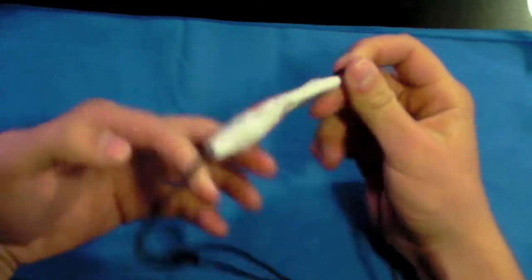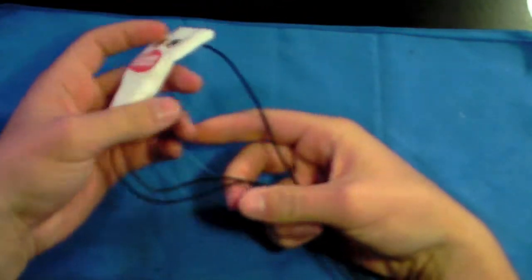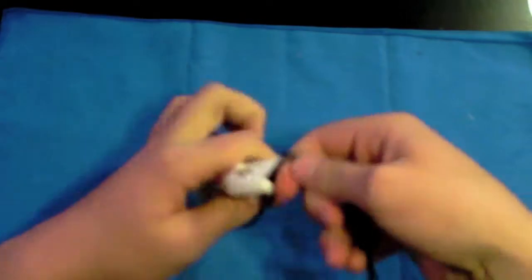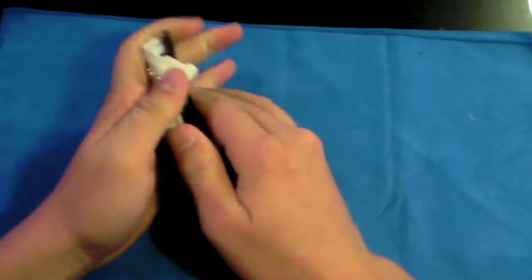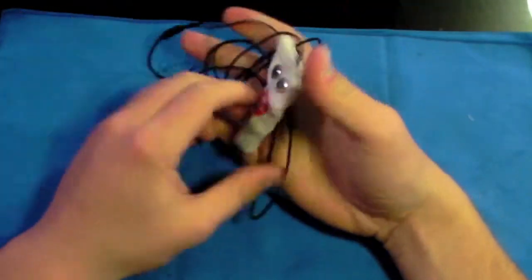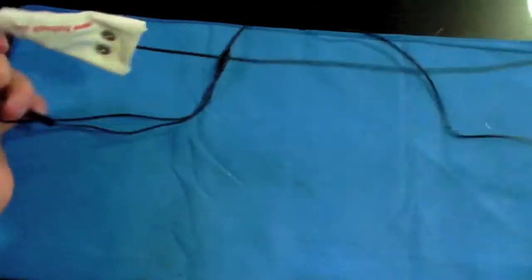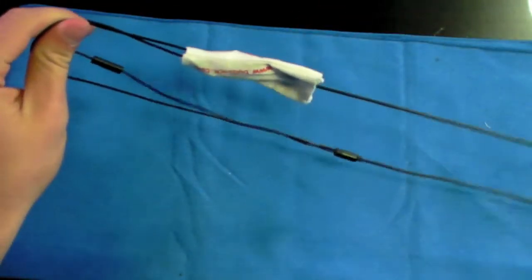And now basically what they advertise you can do with this is you can just take it, crinkle it up in your hand, any which way, just mess around with it, put it in your pocket, anything like that. Total mess. But when you're ready to use it, you just stick your hand in, slide it through and your cables are not tangled at all.